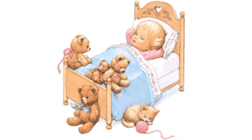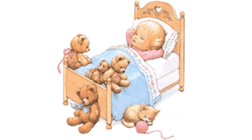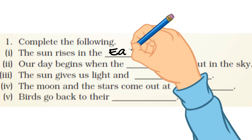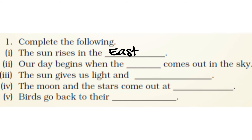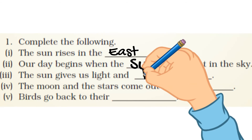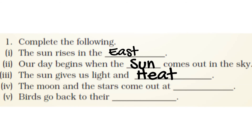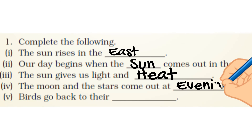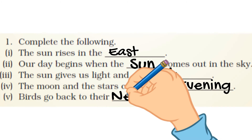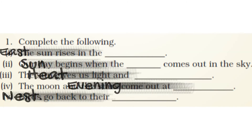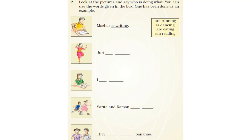Now complete the following: The Sun rises in the east. Our day begins when the Sun comes out in the sky. The Sun gives us light and heat. The moon and the stars come out at evening. Birds go back to their nests.